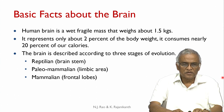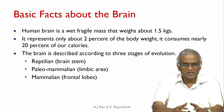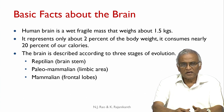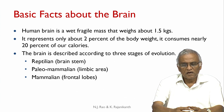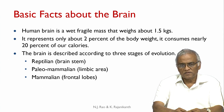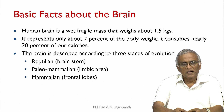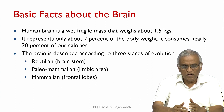Some basic facts about the brain: the human brain is a wet, fragile mass that weighs about 1.5 kg or a little less. It represents only 2 percent of the body weight but consumes nearly 20 percent of our calories — it requires a lot of energy for this 2 percent of body weight to function. The brain can be described according to three stages of evolution: the reptilian brain or brain stem, the paleomammalian brain or limbic area, and the mammalian brain or frontal lobes.